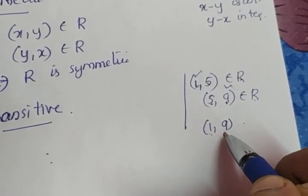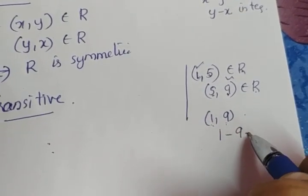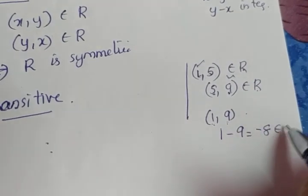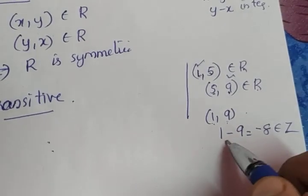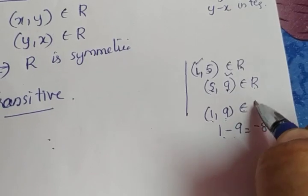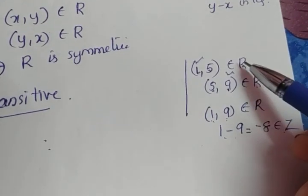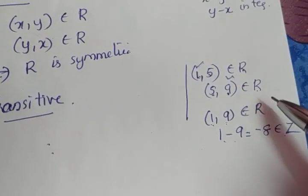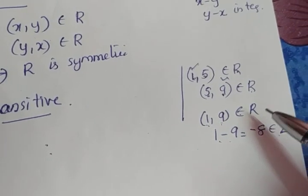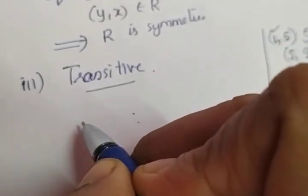What about the difference between 1 and 9? The difference is minus 8. Minus 8 is an integer. Since the difference is an integer, (1,9) belongs to R. This happens - though we check only one pair, it happens for all cases. That means R is transitive.